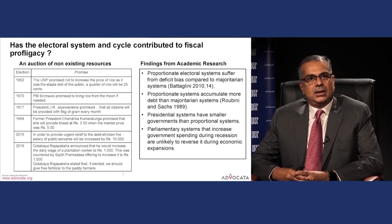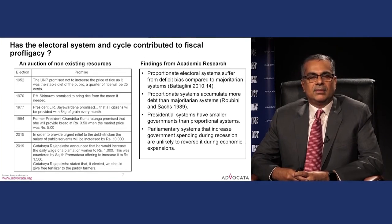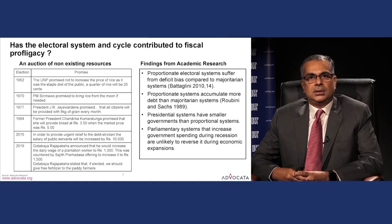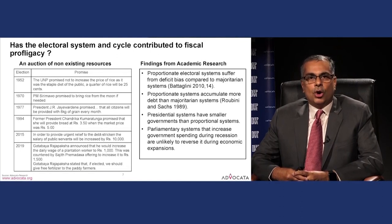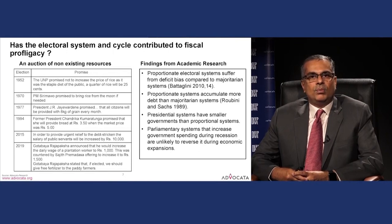Academic research on the electoral cycle finds that proportionate electoral systems suffer from a deficit bias compared to first-past-the-post systems — Sri Lanka has a mixed system. Proportionate systems accumulate more debt. Pure presidential systems generally tend to have lower fiscal deficits and lower debt, while parliamentary systems that run larger fiscal deficits during recessions tend to maintain that going forward.